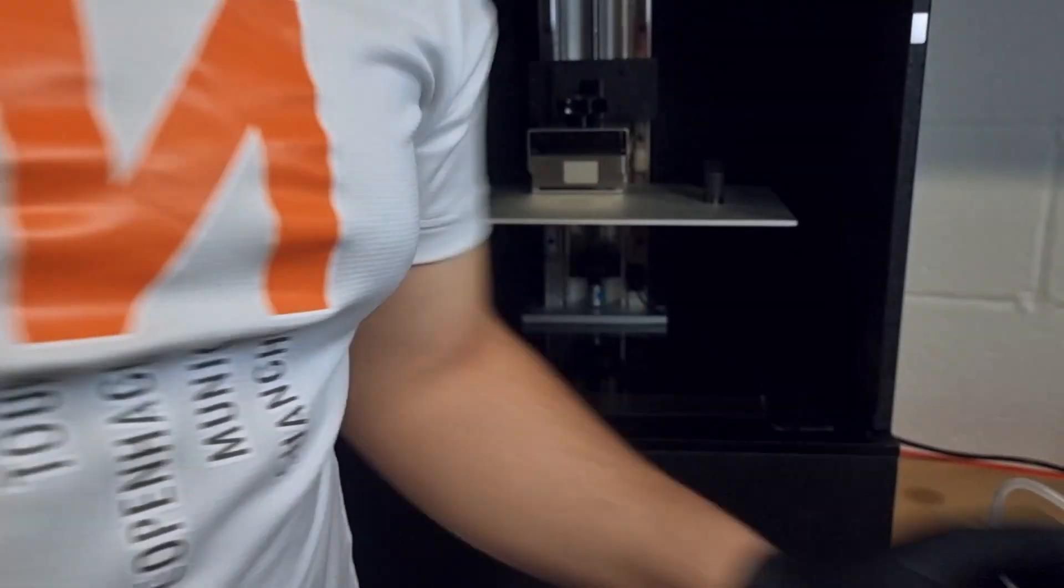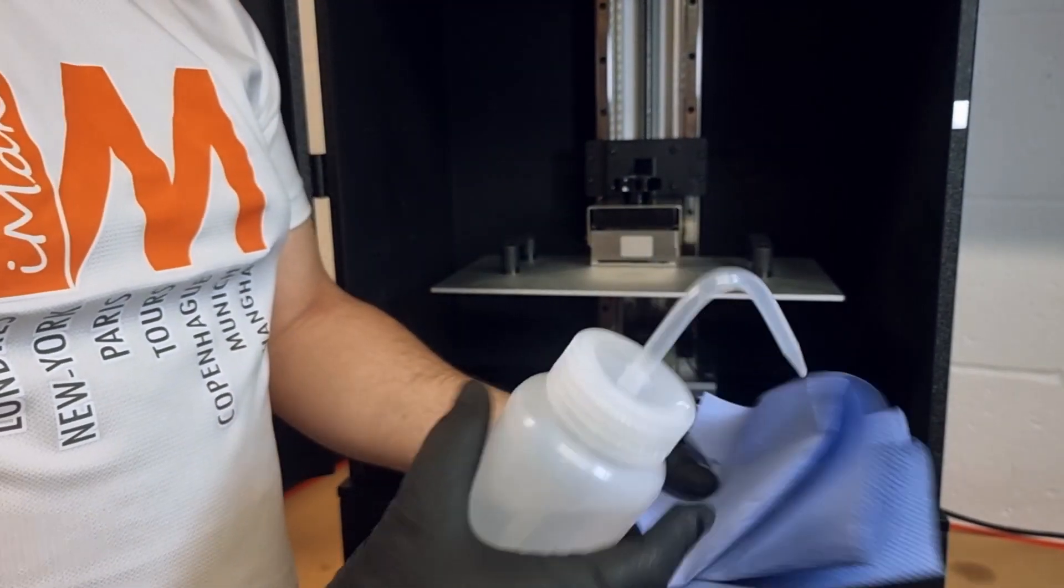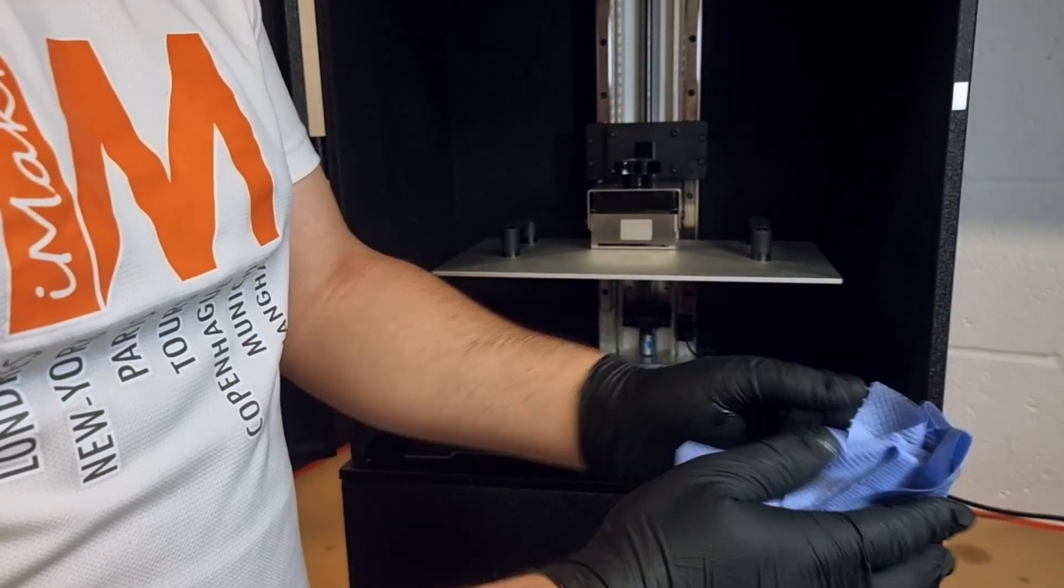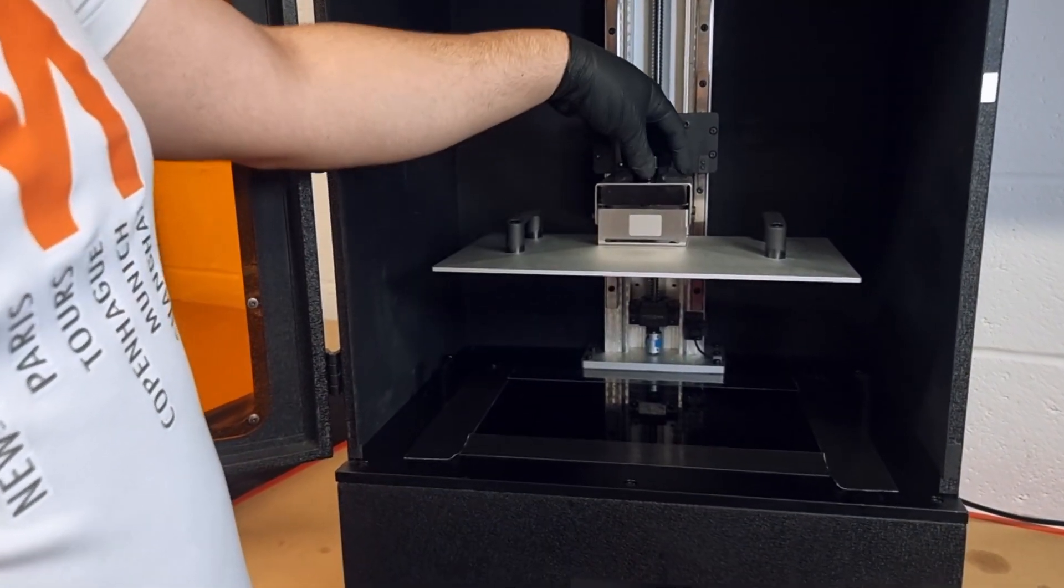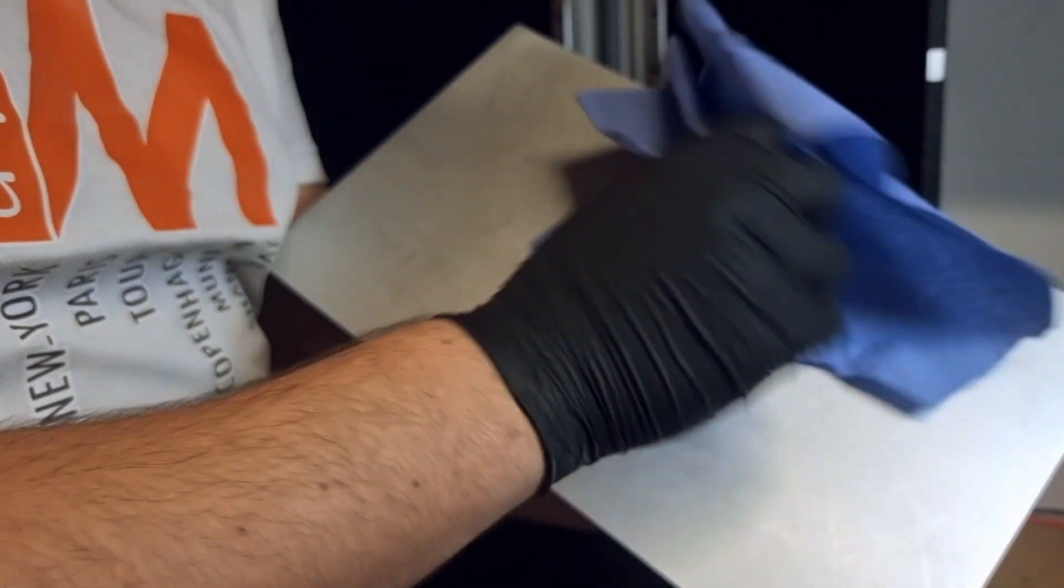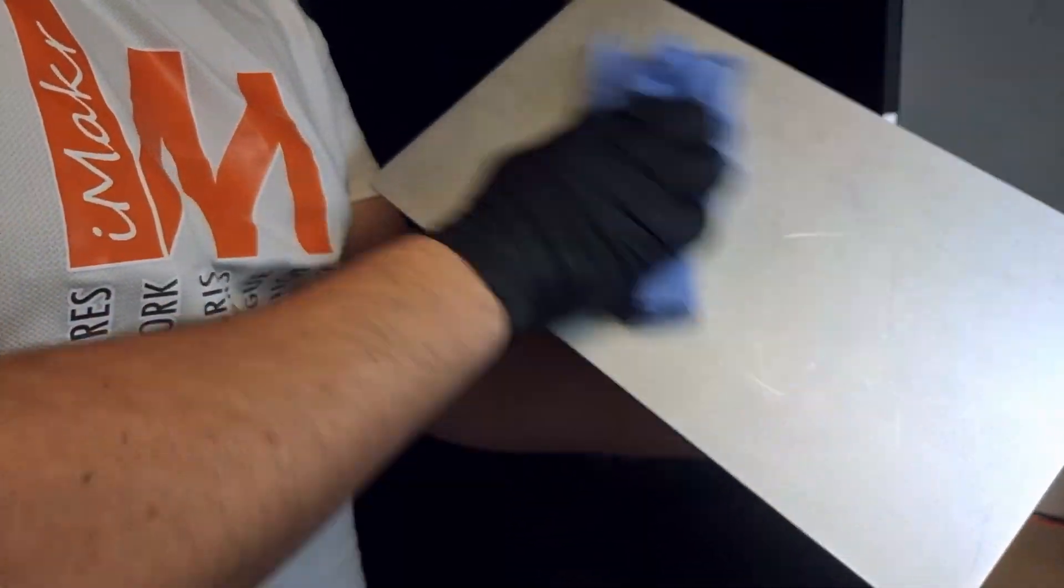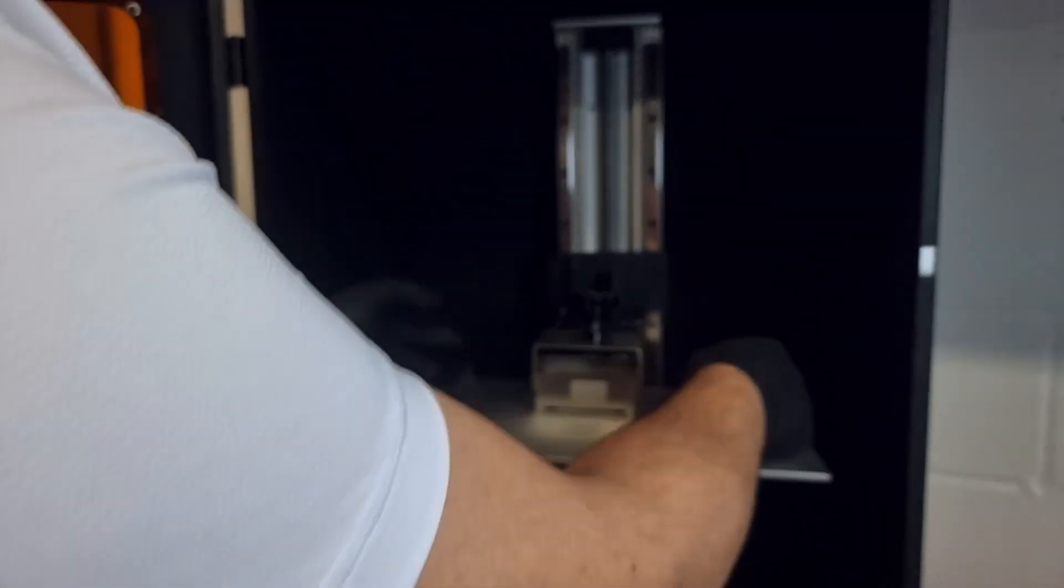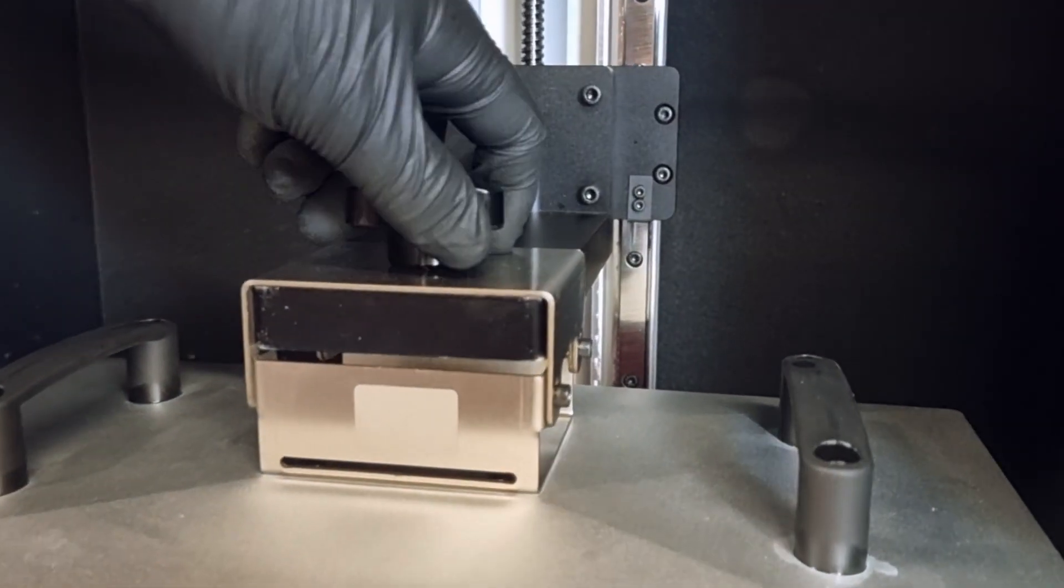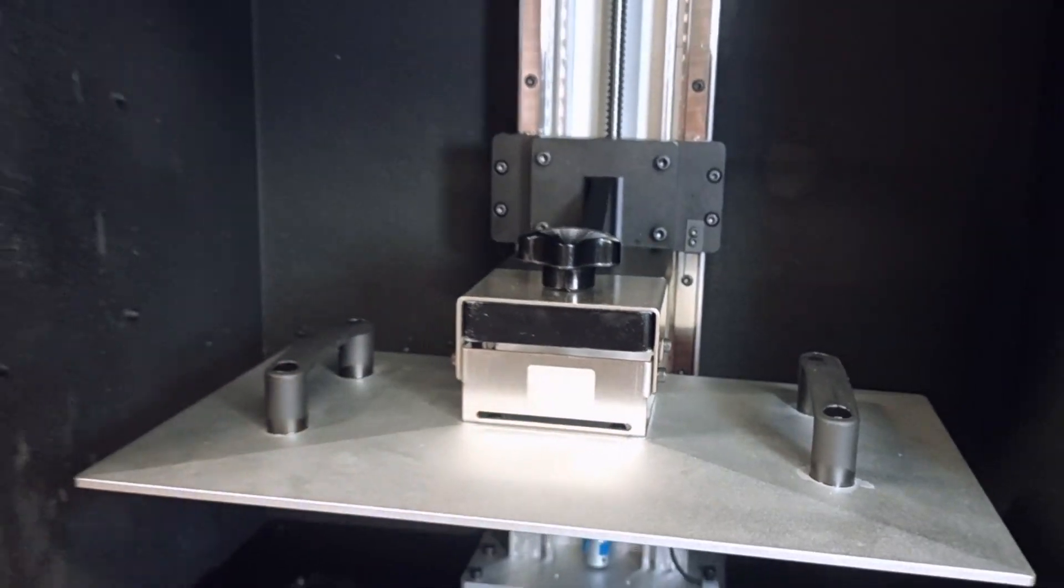Then, now it's time to clean the build platform. To do so, we spray the IPA into the paper towels as you can see here, and then we take out the build platform by unscrewing the build platform screw. We try to clean thoroughly the build platform to remove all the resin from the previous printings. And then we put the build platform back to its place inside the 3D printer and we try to make it as tight as it should be.